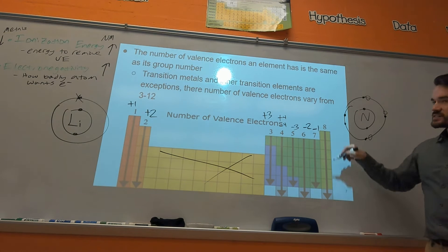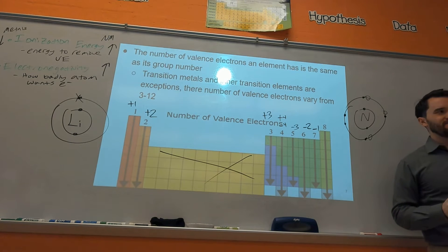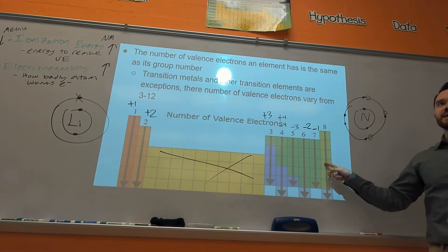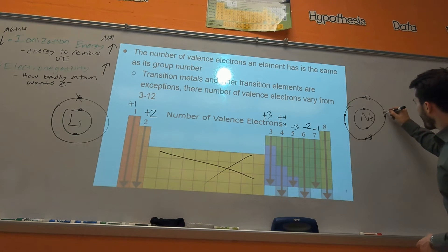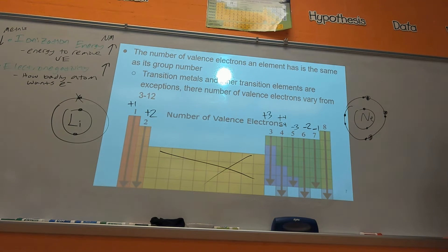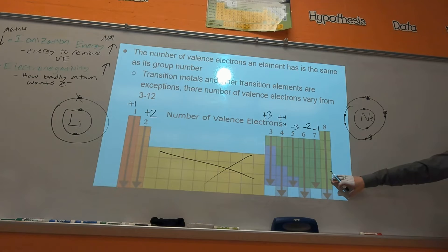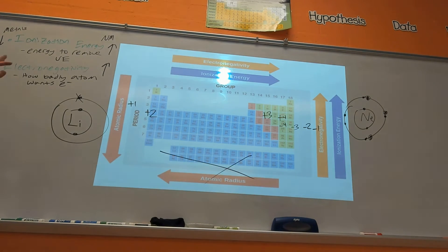What about the last column — the noble gases? Let me draw neon. Neon already has a full shell of electrons, so neon and the other noble gases don't form ions because they don't need to gain or lose electrons — they're already stable.